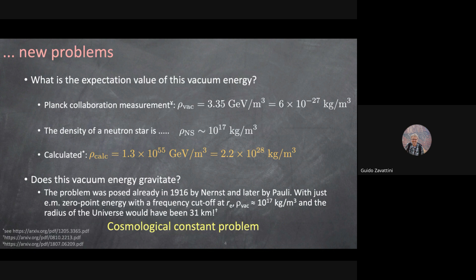They measured this value, published in 2015. As a comparison, the density of a neutron star is many orders of magnitude larger. But if you calculate from first principles the energy density of vacuum due to quantum fluctuations, you get an incredibly large number — 10 orders of magnitude more dense than a neutron star — which makes no sense at all, especially if this vacuum energy gravitates.